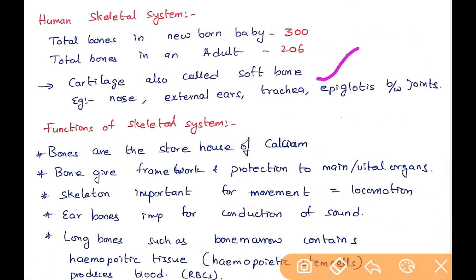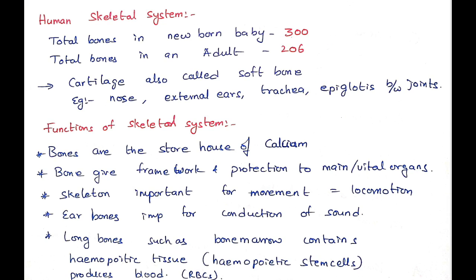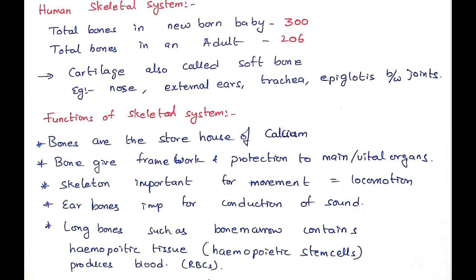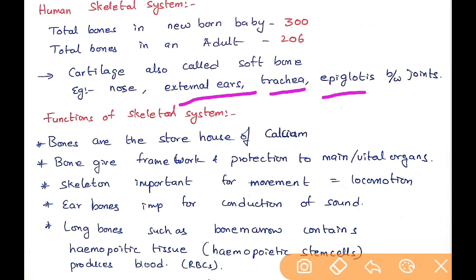Cartilage is also called soft bone. The softest part of bone is known as cartilage. We can see cartilage clearly in the nose, external ears, trachea, epiglottis, and between the joints.